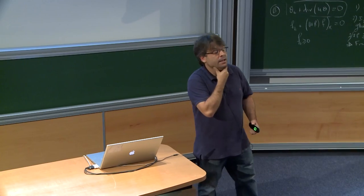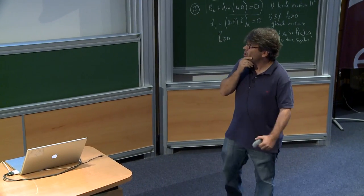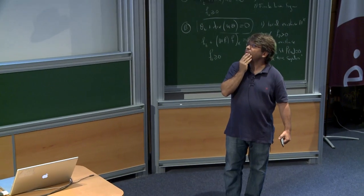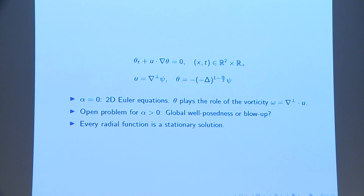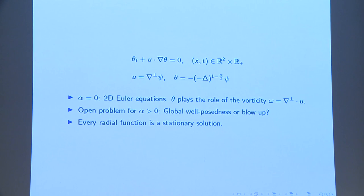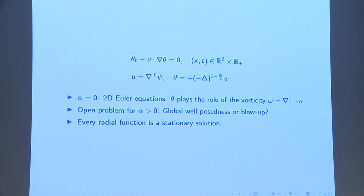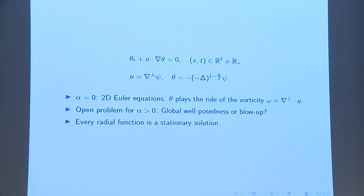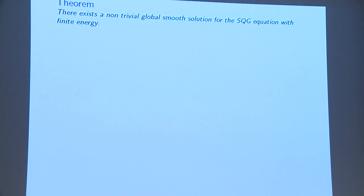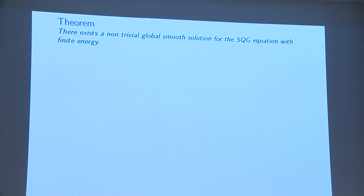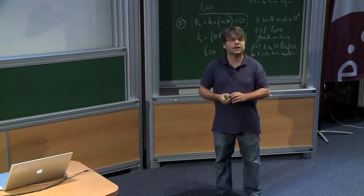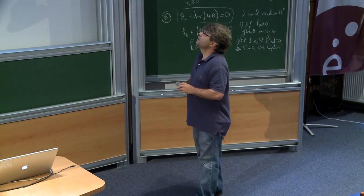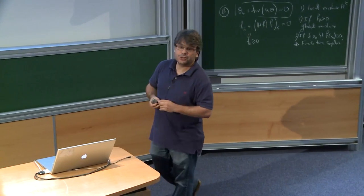For the purpose of this talk, radial functions are stationary solutions for all alpha, because the powers of the Laplacian preserve the symmetry and make the nonlinear term zero. The theorem I want to present is that we prove the existence of non-trivial globally smooth solutions for the SQG equation.